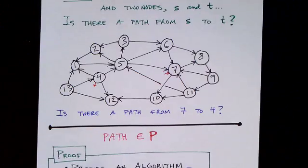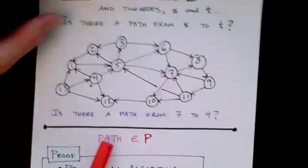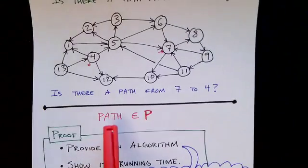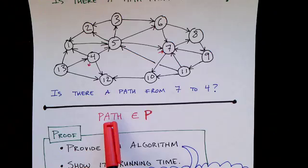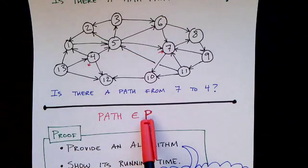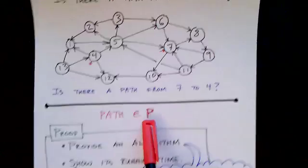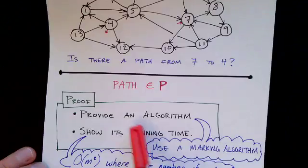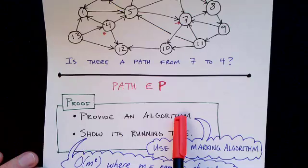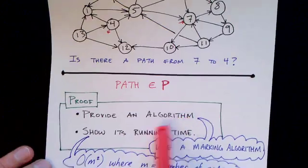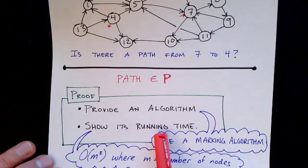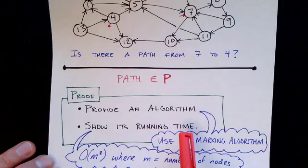So in order to prove that this problem can be solved in polynomial time, that is to prove that this problem is a member of the complexity class P, we need to do two things. We need to provide an algorithm that will decide this problem and then we need to show its running time and show that that is a polynomial function.